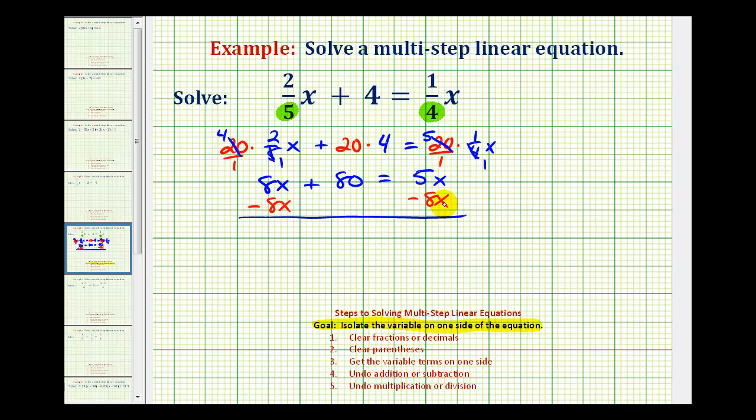Again the reason we're doing this is eight x minus eight x would be zero. So now this x term on the left is gone and we're left with eighty equals five x minus eight x which would be negative three x.